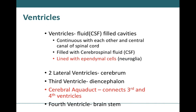Ventricles are cavities found within the brain that contain cerebrospinal fluid. Several ventricles connect with each other to allow exchange of CSF. All ventricles are lined by ependymal cells — the epithelial cells of the CNS — which contain cilia to help circulate cerebrospinal fluid. All ventricles are also continuous with the central canal of the spinal cord. We have four ventricles: two lateral ventricles housed within the cerebrum, a third ventricle in the diencephalon, and a fourth ventricle connected via the cerebral aqueduct.